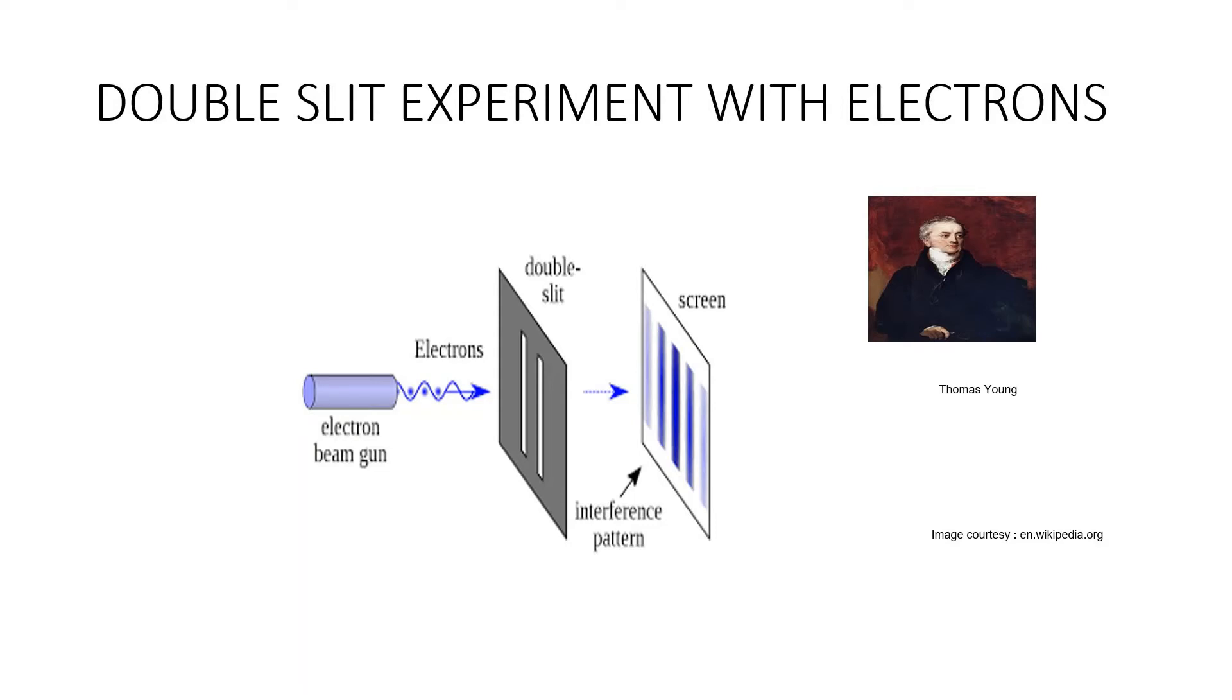Let us block off one of the slits. Then the electrons will fall on the photosensitive screen and produce a flash of light and it behaves like matter.